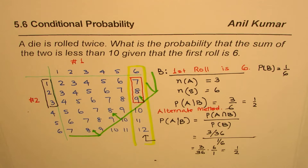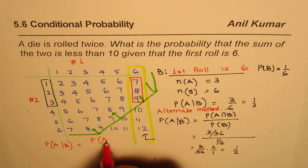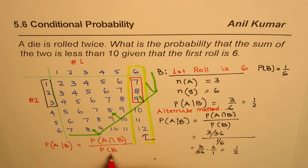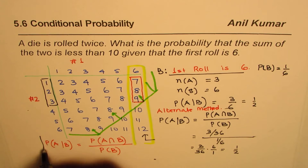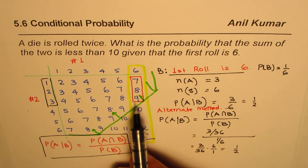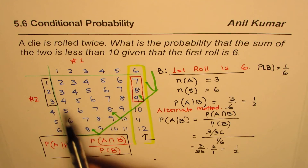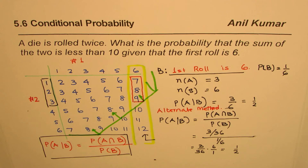I hope you understand how to apply the conditional probability formula. To summarize: the probability of event A when B has occurred equals the probability of the intersection of A and B, divided by the probability of B. That is the formula for conditional probability. At times, a figure like this can show you the result directly — as we saw here, there are only 3 out of 6 chances of getting a sum less than 10, so the probability is 3/6, which is one half. You can use logical reasoning or the formula — both lead to the same answer.